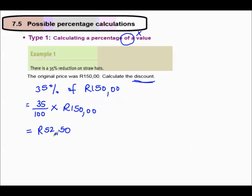Remember to check your question. Calculate the discount. So the discount was 52 rand 50. How much did he pay? Then you would have to take the original price minus the discount to get the amount paid.